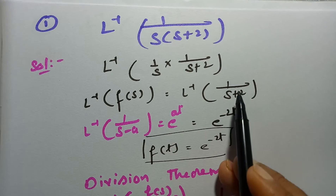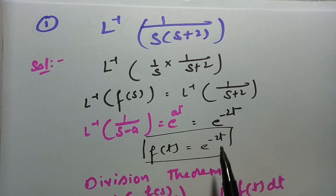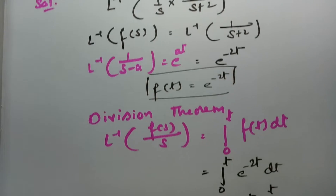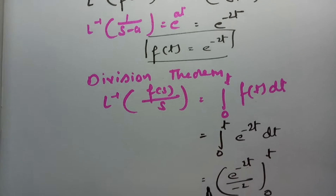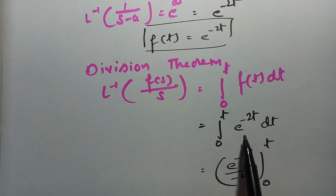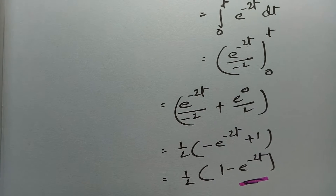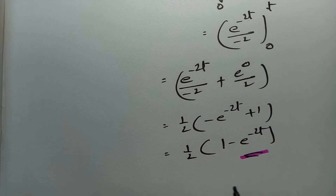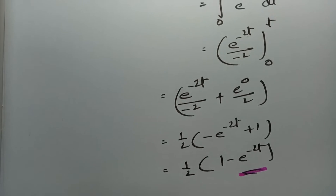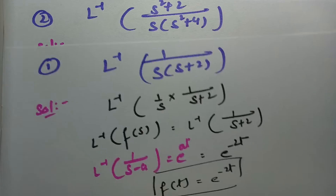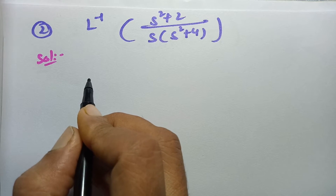Substituting the limits and simplifying: taking 2 as common, we get (1/2)(1 − e^{−2t}). This is the final answer using the division theorem. Once again: I took F(s) = 1/(s+2), applied inverse Laplace to get f(t) = e^{−2t}, then since F(s) is divided by s once, I integrated f(t) once, giving the final answer (1/2)(1 − e^{−2t}).